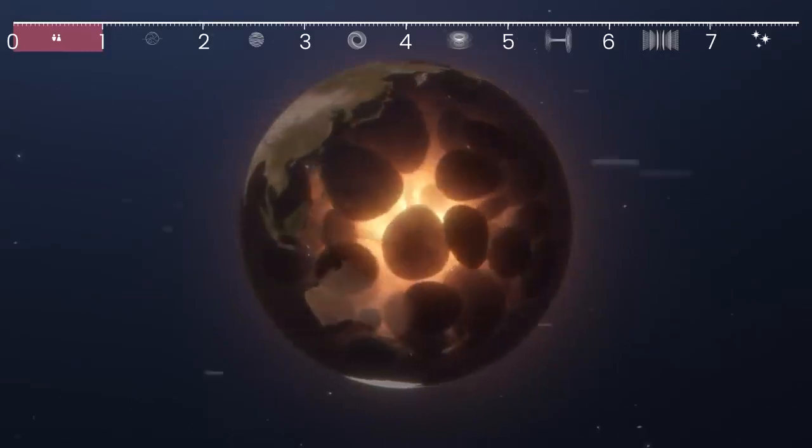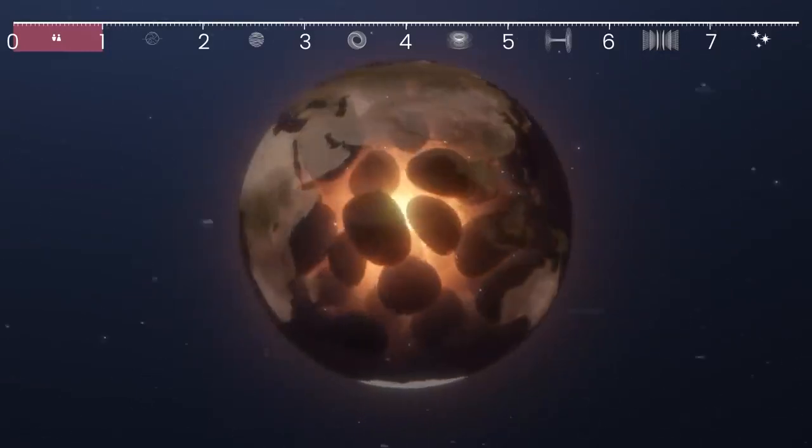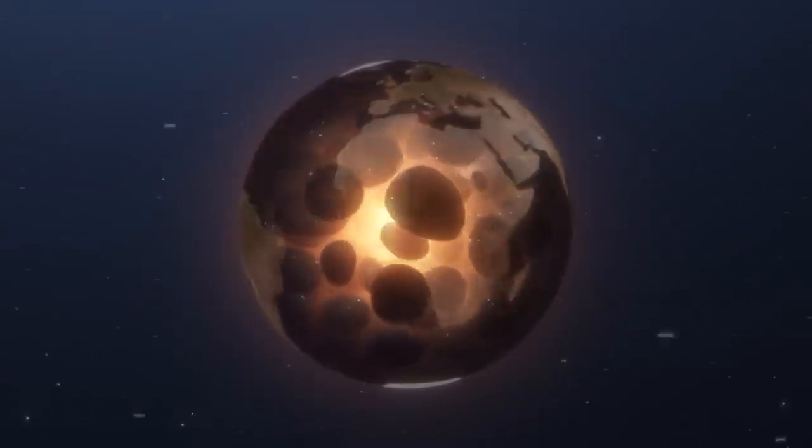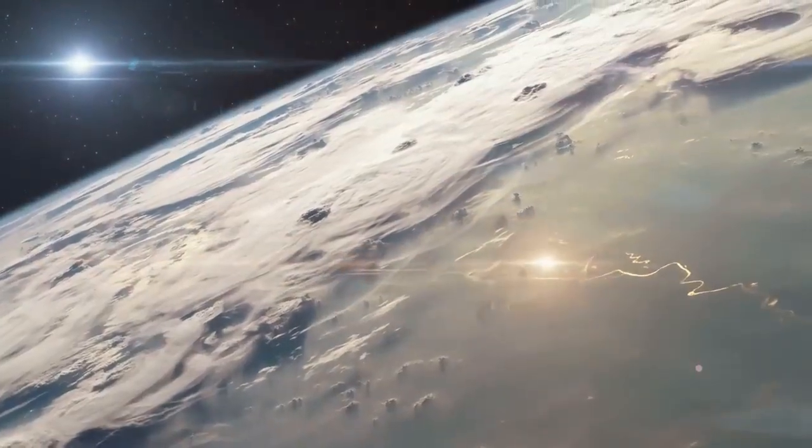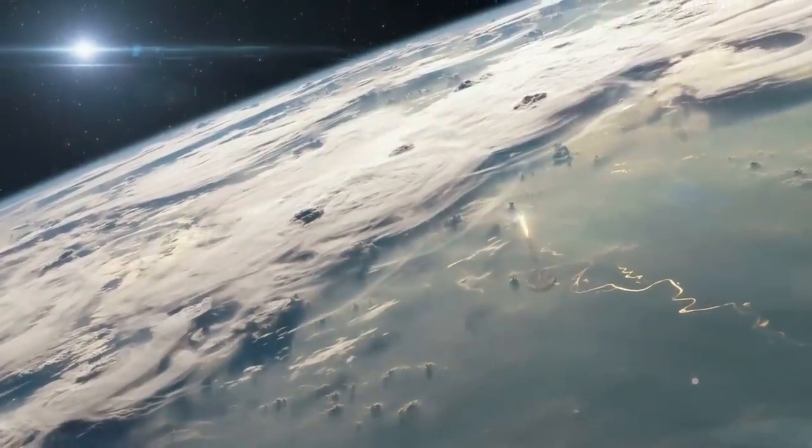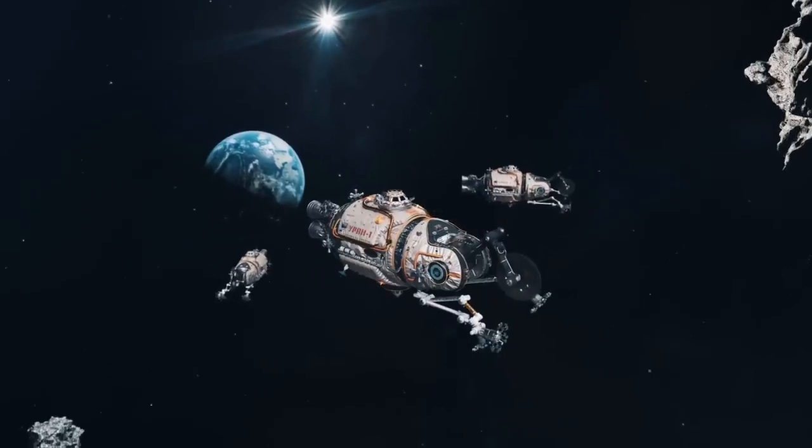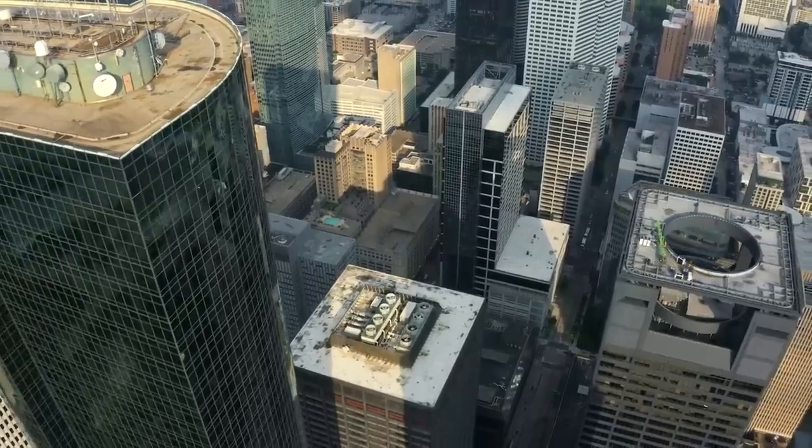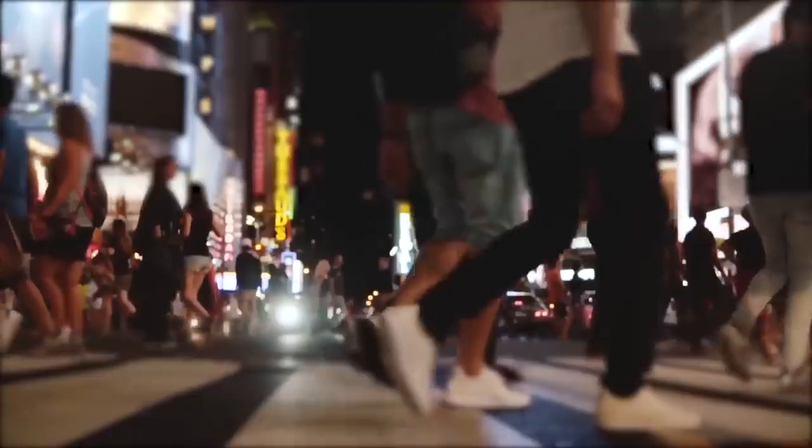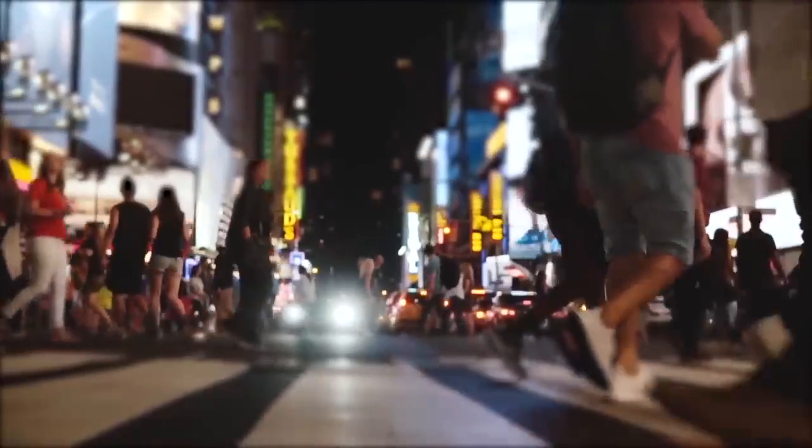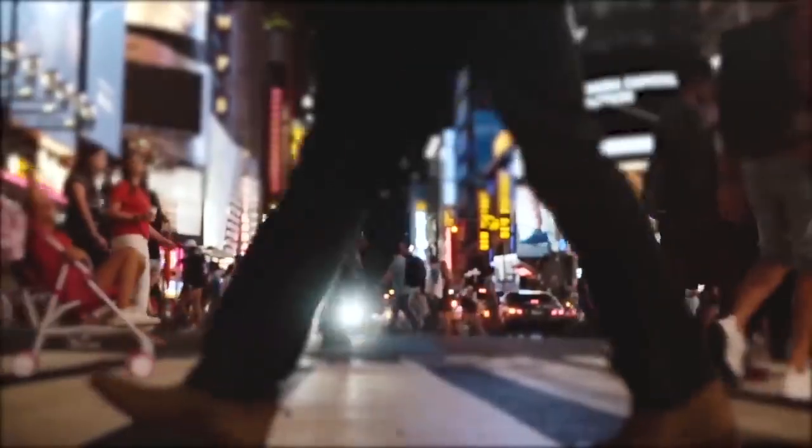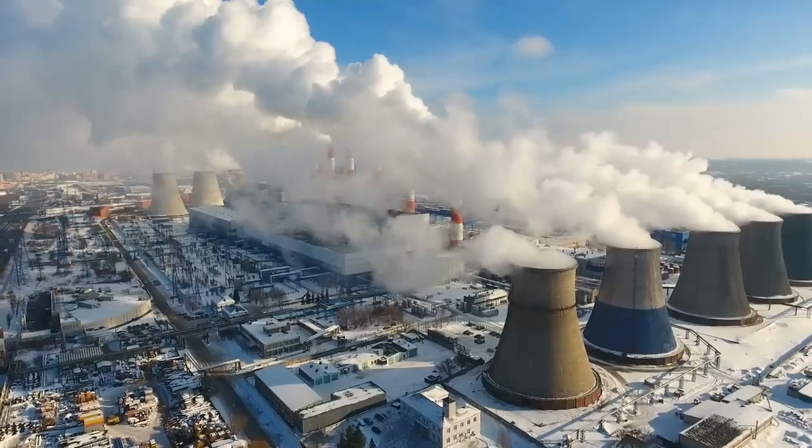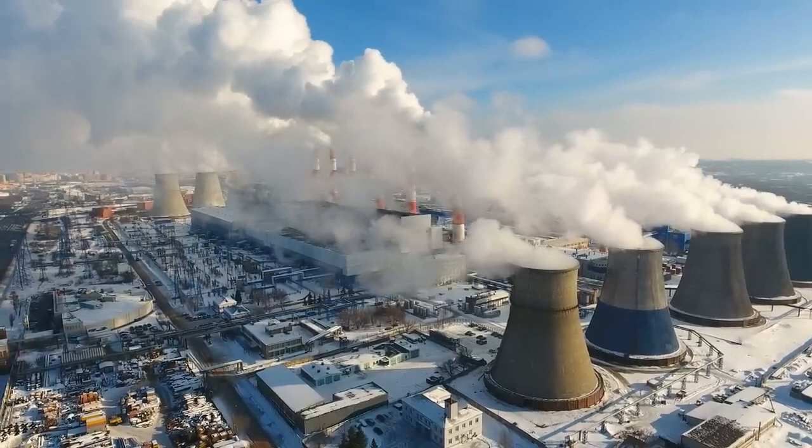A Type 0 civilization uses almost all of the natural resources on their planet to obtain energy, launching into space using rockets fueled by chemical energy. That's where we are right now. This is because a Type 1 civilization consumes a minimum of 10 to the 16 watts of energy, and we currently consume about 10 to the 13 watts of energy. This puts us at about 0.73 on the scale.